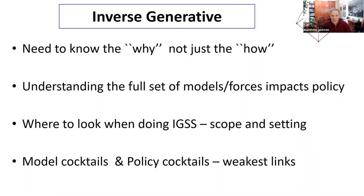Understanding exactly what's the right model to generate observed behavior is important because that's the foundation for any policy analysis or out-of-sample predictions we want to make. If we're trying to figure out how the world is going to change or how we should design policies, we need to know we have the right model and have hit the essential features. Often there are many different forces impacting any particular situation, and it might not be just one model that's right.